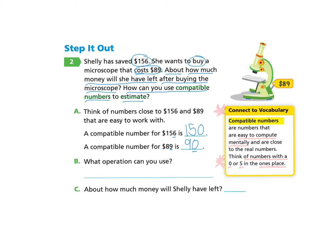Let's look at part B. What operation can we use? Our goal is to find out how much money she will have left after buying the microscope. So we will use the operation of subtraction to find out how much money she has left. And we'll use our compatible numbers. So part C says about how much money will she have left.